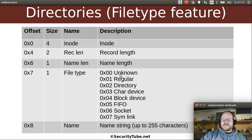So we have a file type of: unknown, just a regular file, directory, character device, block device, FIFO, socket, or symlink. And these should look familiar — we've talked about these in previous videos and how this is in the mode information that is stored in some of these entries. And then we have our name string. So that's a small change.